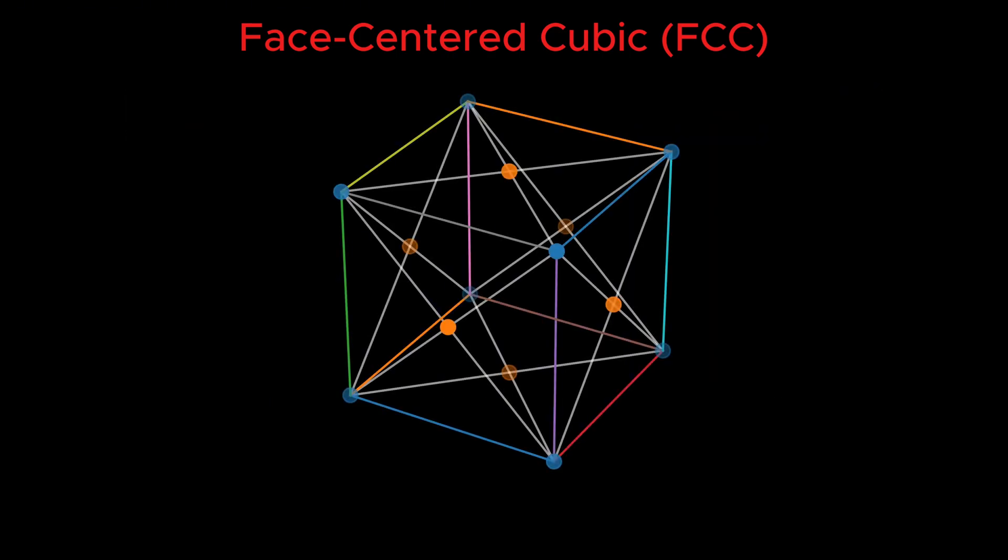In FCC crystals, atoms are located at the eight corners of the cube and at the center of each of the six faces. Face-centered means each face of the cube hosts an atom right at its center. Corner atoms are shared among eight cubes, so each cube owns only one eighth of a corner atom. Face atoms are shared between two cubes, so each contributes half.